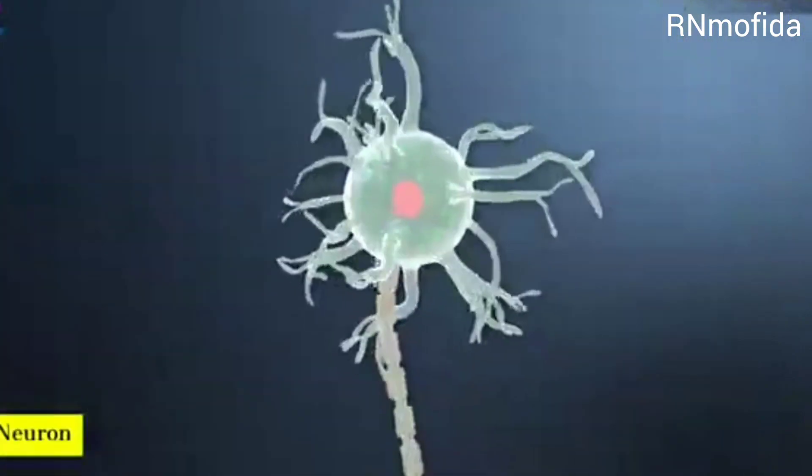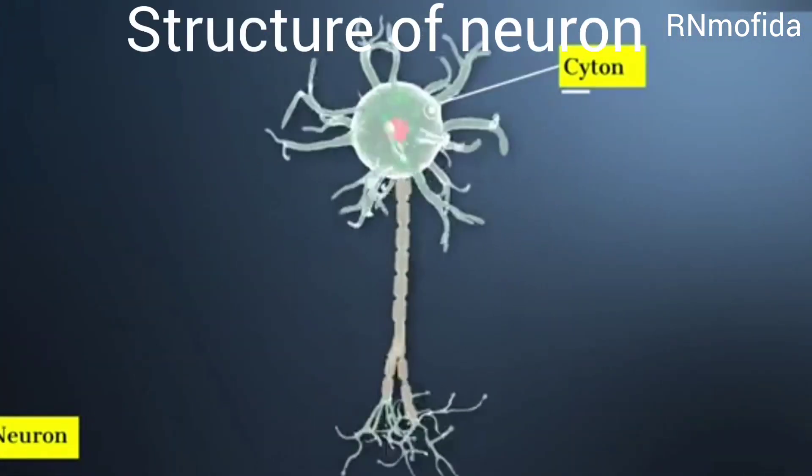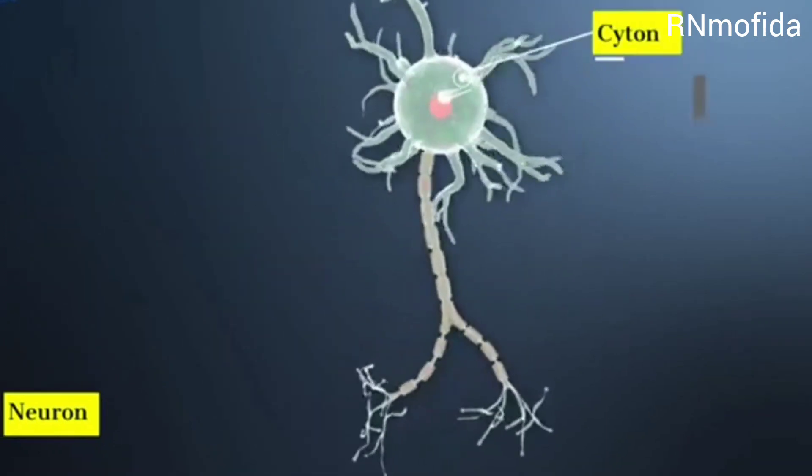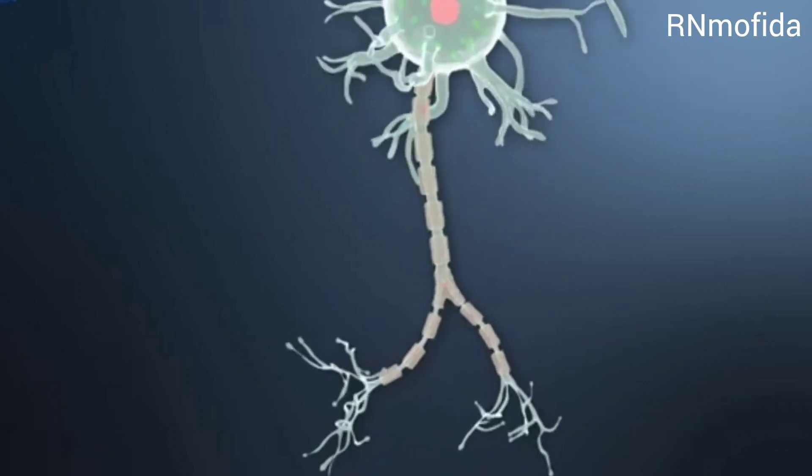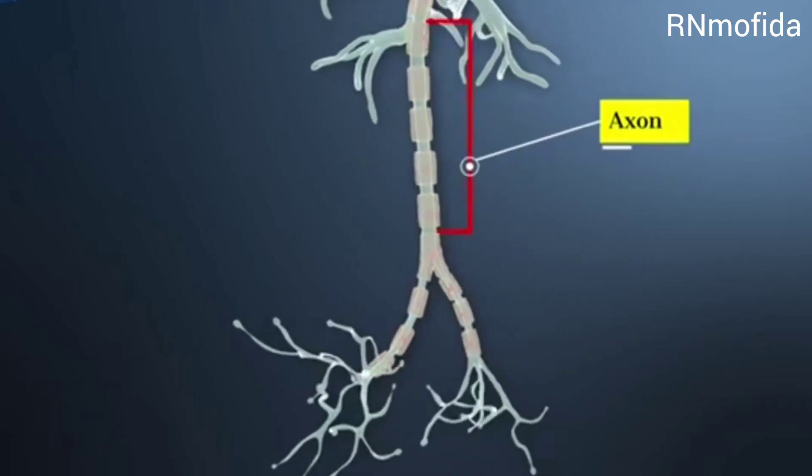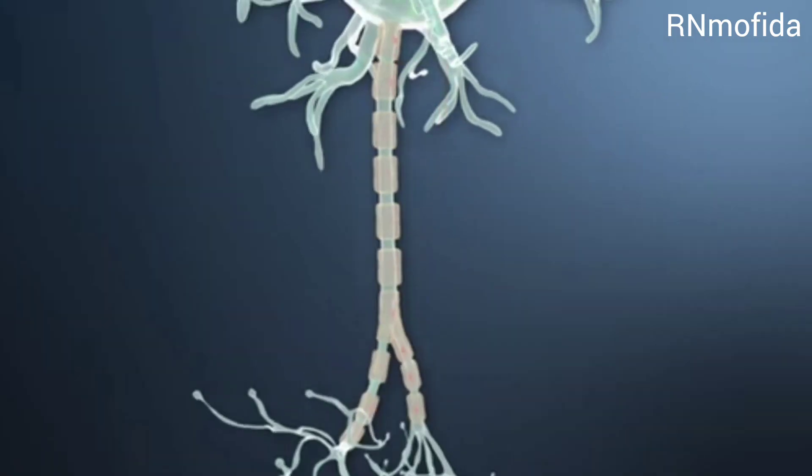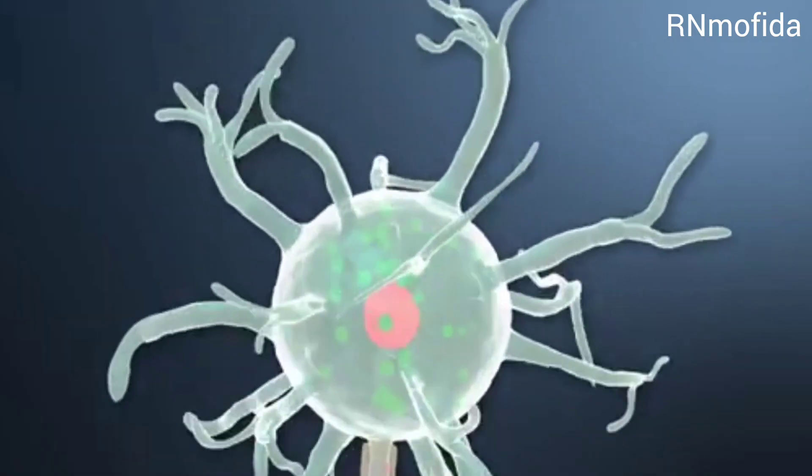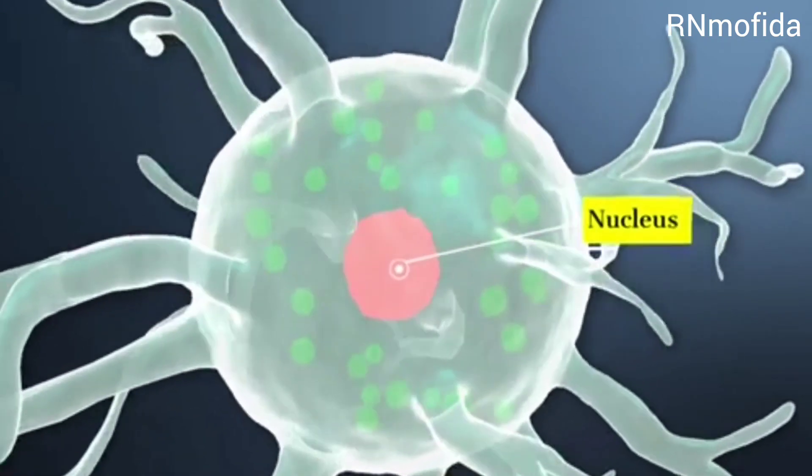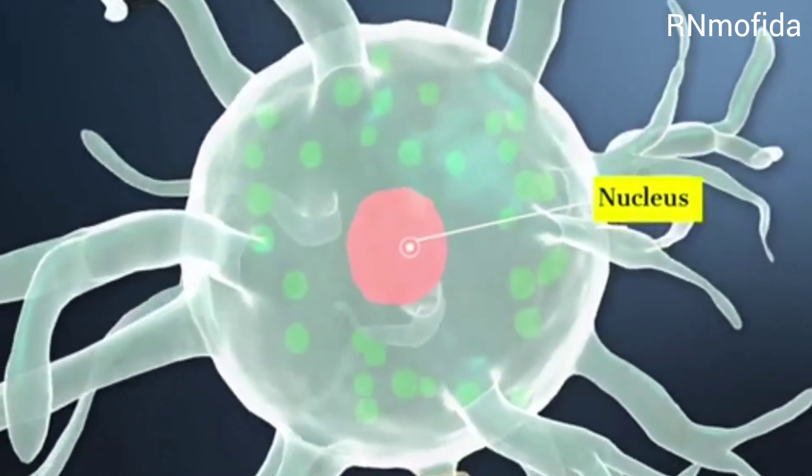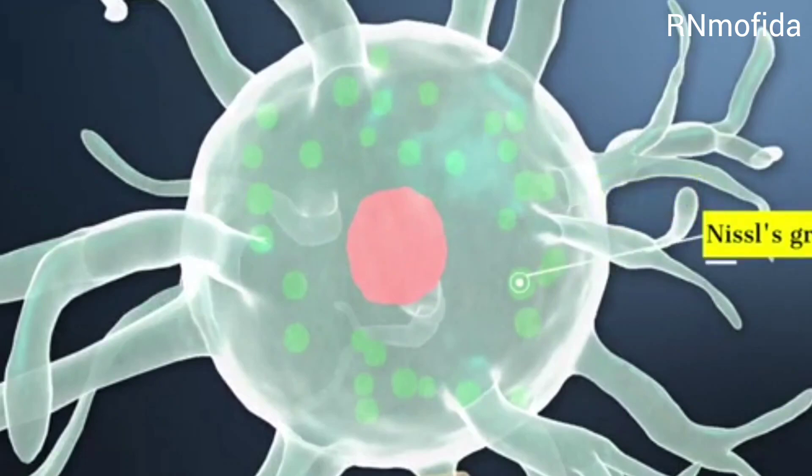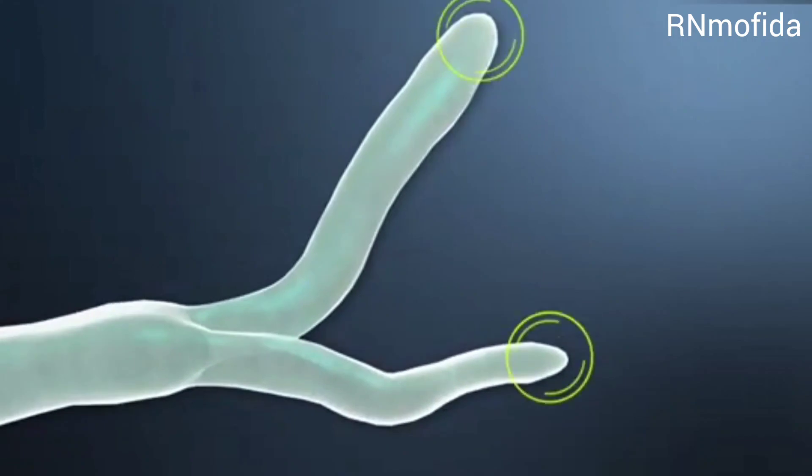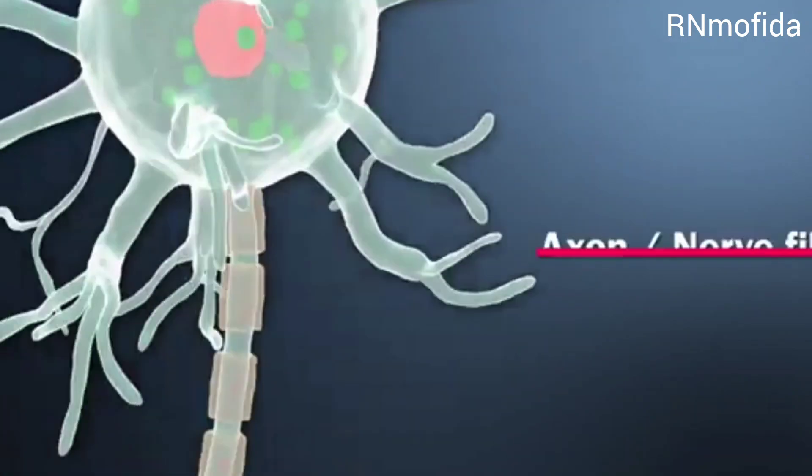Coming to the structure of neurons, like other cells, neurons also have a cell body called the cytone and also have branches or processes called axons. The cell body of the neurons contains a nucleus in the center and cell organelles in the cytoplasm. These organelles are called Nissl granules. The cytone has branch-like projections called dendrites.